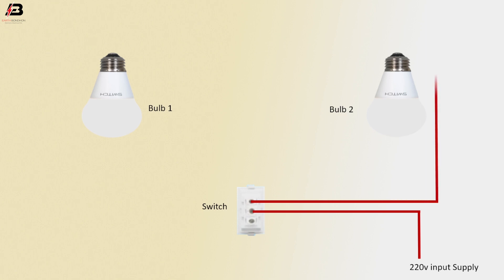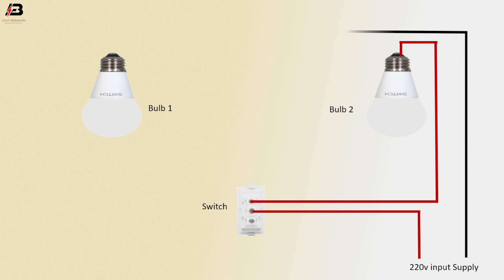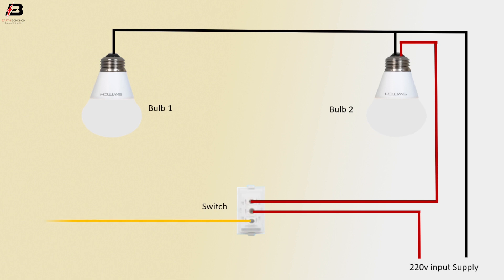Phase connection from switch L1 terminal to bulb 2. Phase connection neutral connection to bulb 1 and bulb 2. Output phase connection from switch L2 terminal to bulb 1.